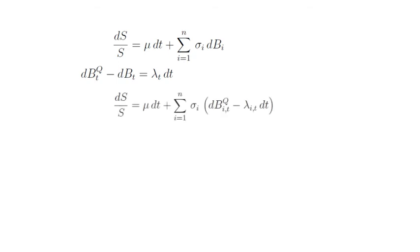Therefore the respective relationship is that dS over S equals μ dt plus the sum i, 1 to n σ_i times (dB^Q_i,t minus λ_i,t dt). Now we take the drift part λ_i,t dt into the front. So we therefore see that dS over S equals (μ minus the sum of all σ_i times λ_i,t) times dt plus our shocks. Now the sum from i equals 1 to n of σ_i dB_i^Q.